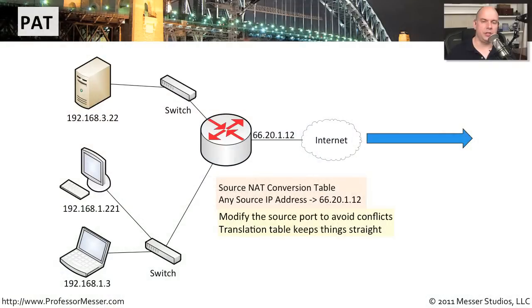Network address translation is a way to take a source or destination address that's going through the network and modify them as they move through a router, firewall, or another device that supports this modification of IP addresses.